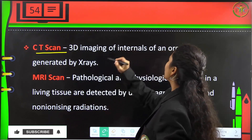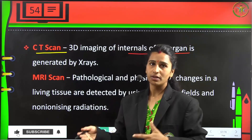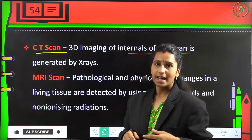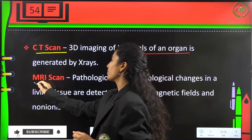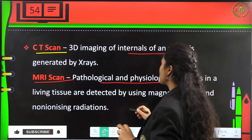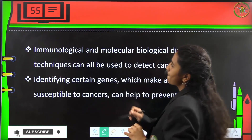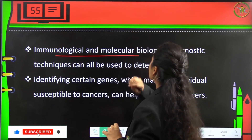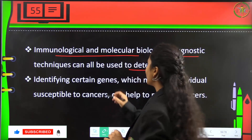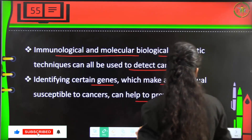A CT scan is a 3D imaging of the internals of an organ generated by X-rays. This is why pregnant women are advised against exposure to CT scans, as X-rays are very dangerous for the fetus. MRI detects pathological and physiological changes in living tissues using magnetic fields and non-ionising radiations. Immunological and molecular biological diagnostic techniques can also detect cancers, and identifying susceptibility genes can help prevent them.